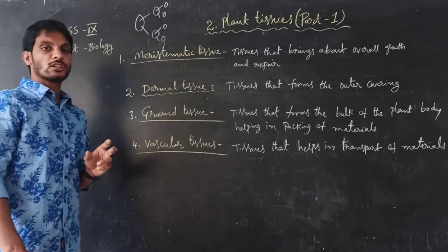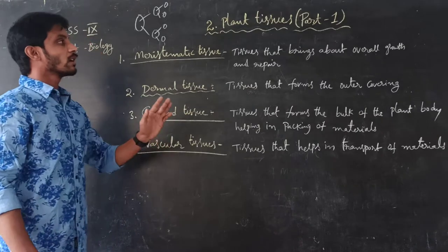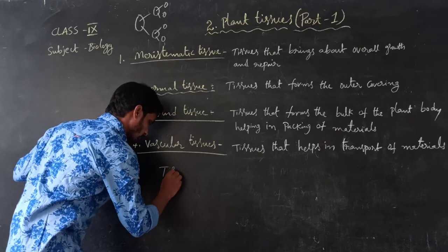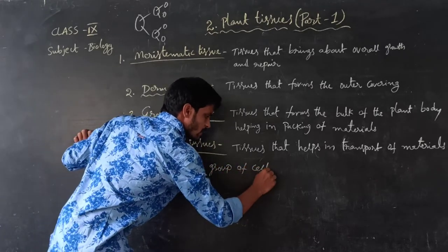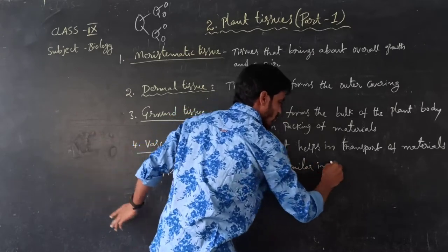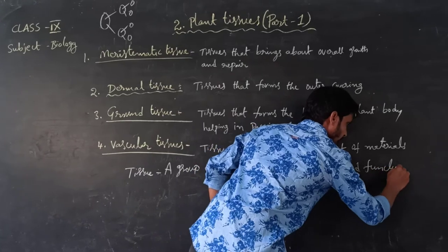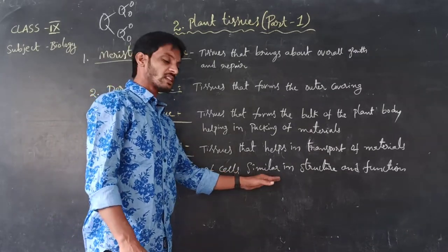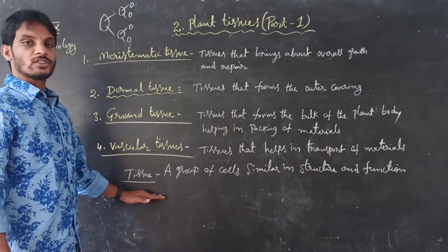A group of cells together form a tissue. What is meant by tissue? Tissue means a group of cells similar in structure and function — that is called a tissue.